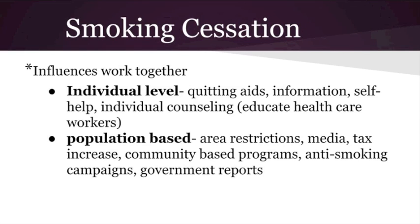How does smoking cessation work with the theory? The influences work together on both individual and population levels. At the individual level, there are many quitting aids — nicotine replacements such as nicotine gum, or prescriptions from a doctor. There's also information everywhere about lung cancer and how smoking affects your lungs — pamphlets in doctor's offices, information on billboards. There's also self-help and individual counseling available.